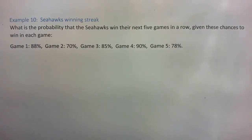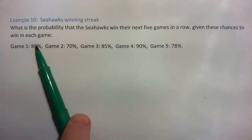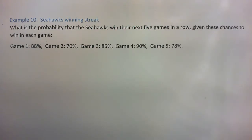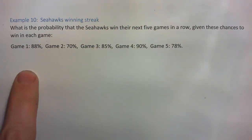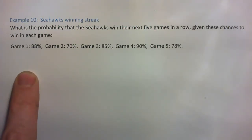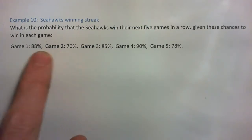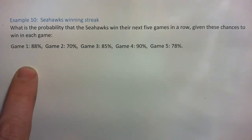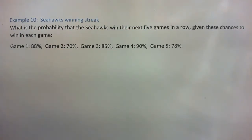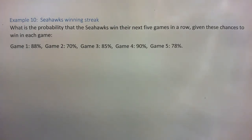Press pause and figure that out. We're going to assume that these are independent events, which in real life they're not exactly — because if a team loses a game, sometimes that can affect them in a bad way and they start fighting each other and have more chance of losing the next game. Or if they lose a game, they could really come together and work hard and make sure they win the next game. So these events are not truly independent, but we're going to assume they are for the sake of using the product formula, since teams play close enough to the same level each game.